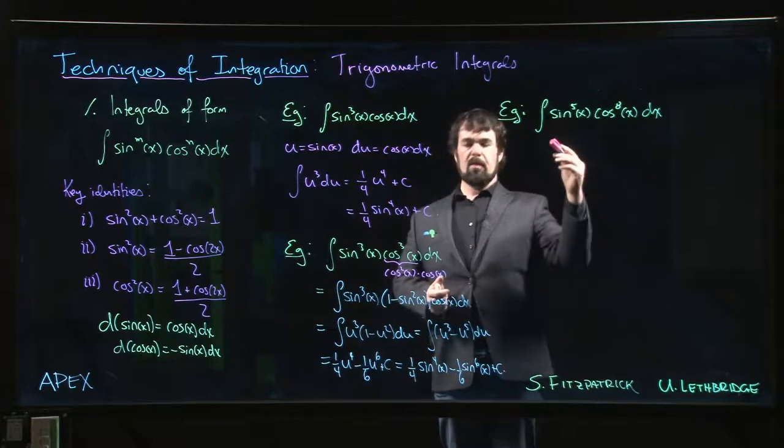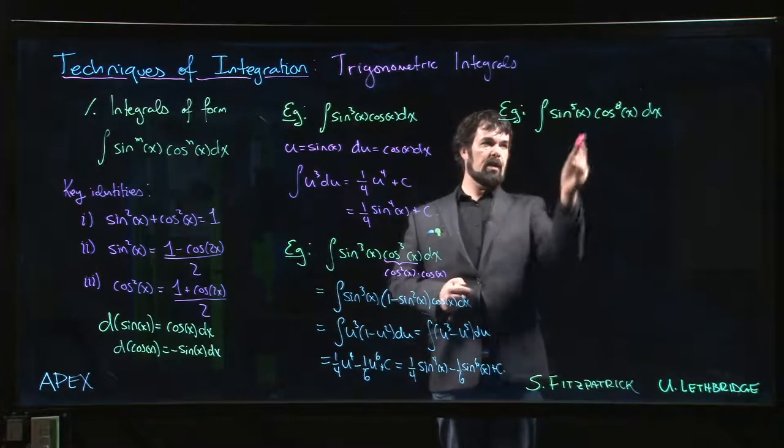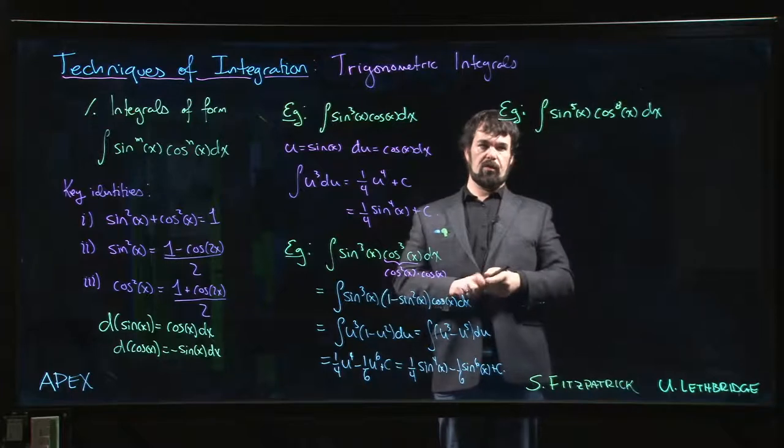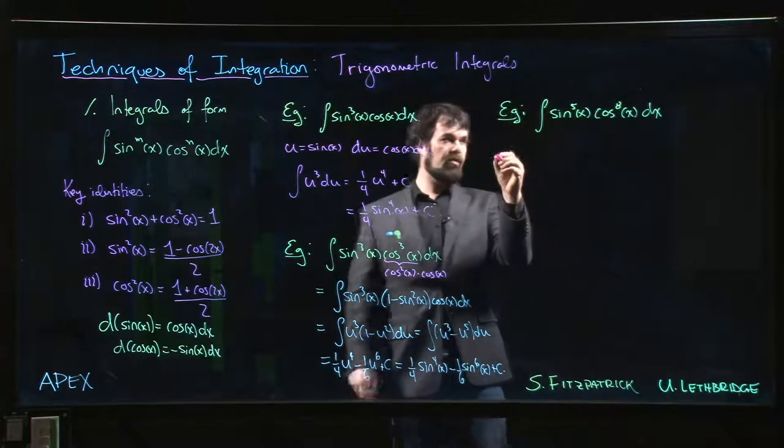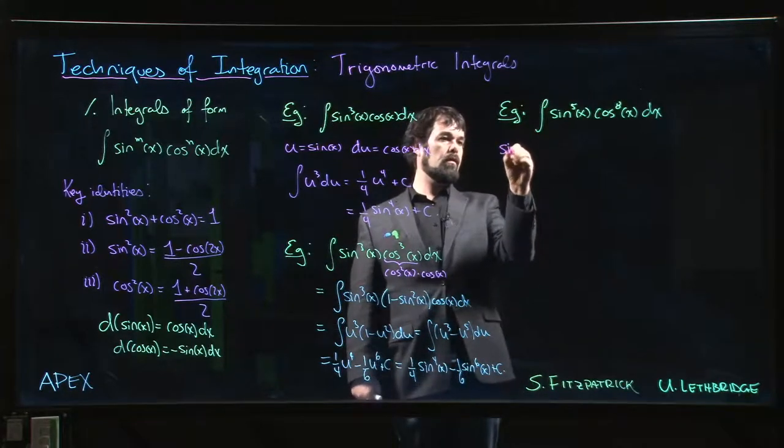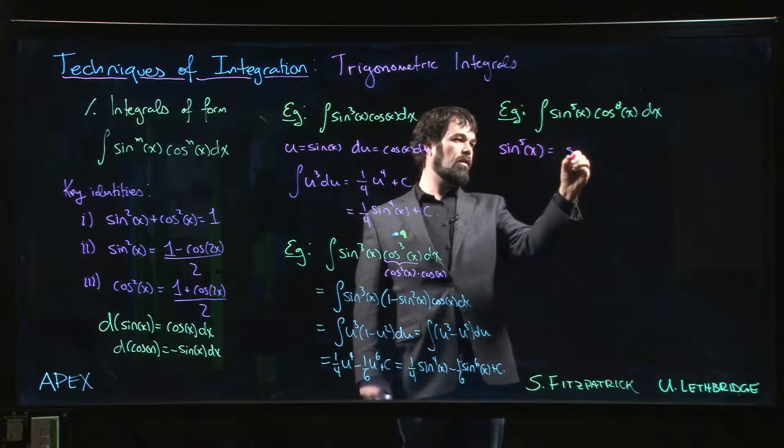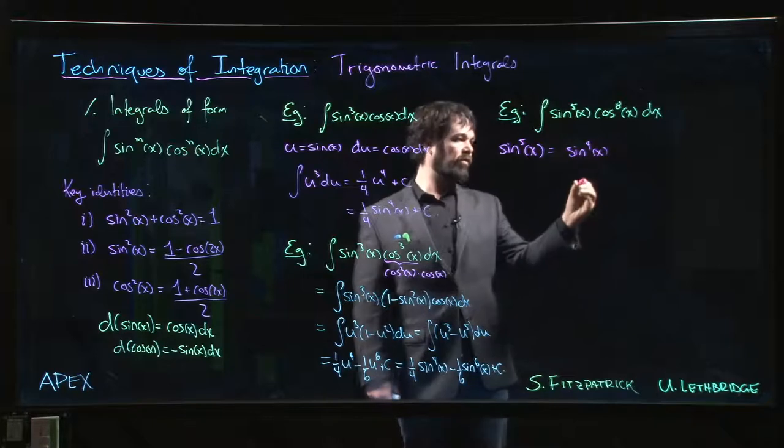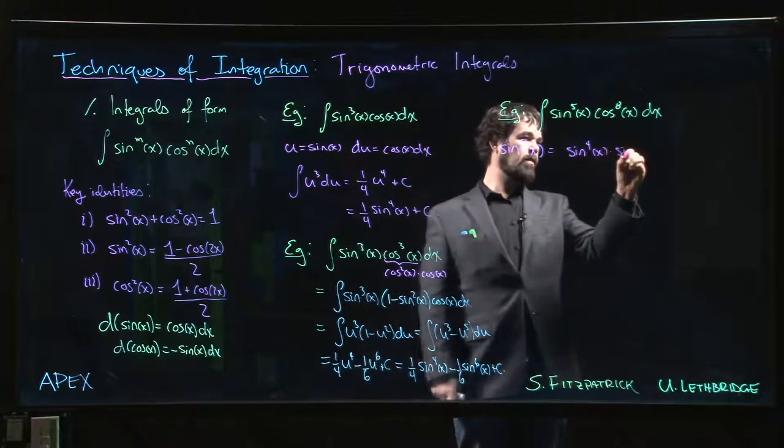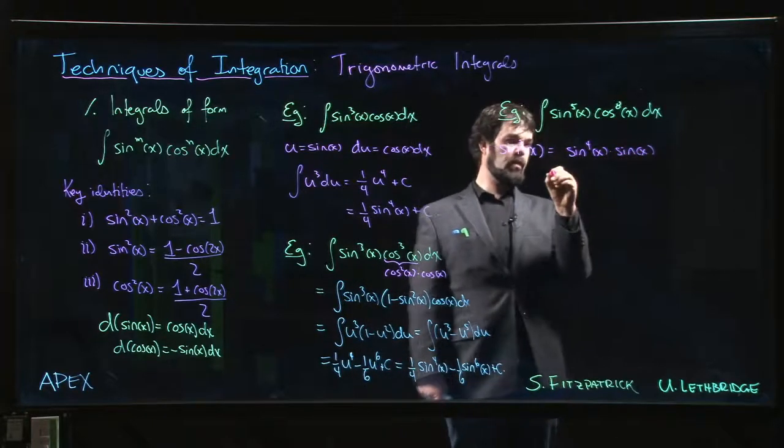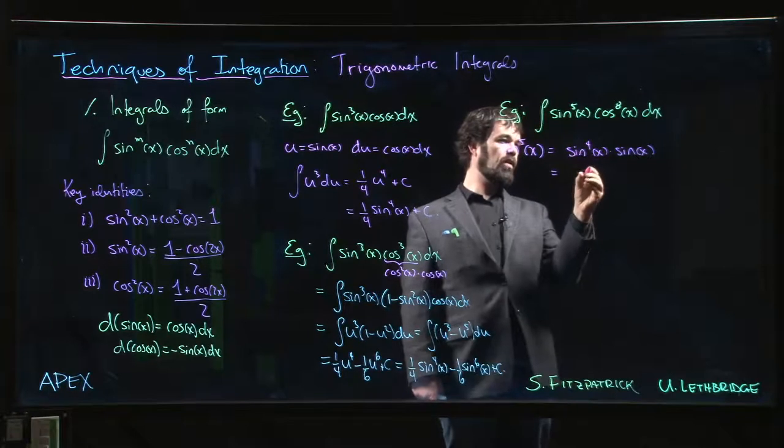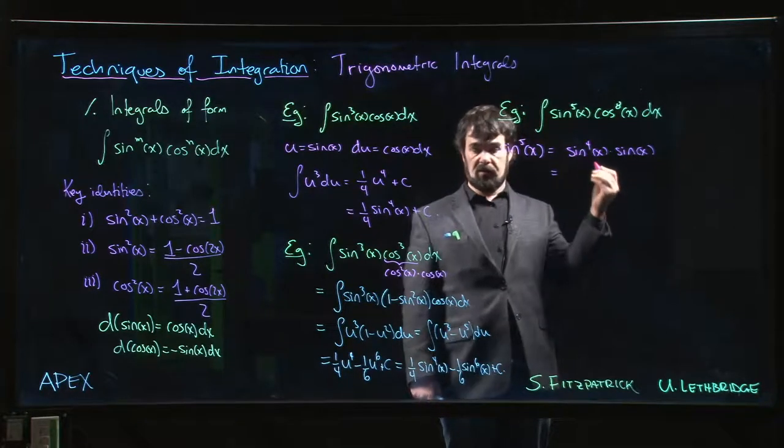We're pretty much forced to manipulate the sine portion of the integral. So sine to the fifth x, I can write as sine to the fourth x times sine x. And sine to the fourth, of course, is sine squared squared.